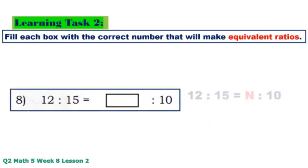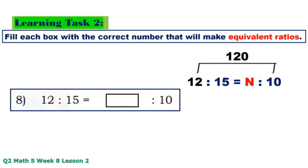Number 8: 12 times 10 equals 120, 15 times N equals 15N. 120 divided by 15 equals 8.